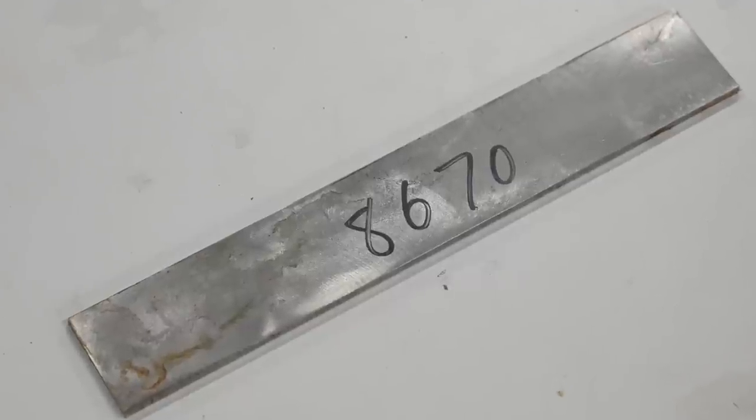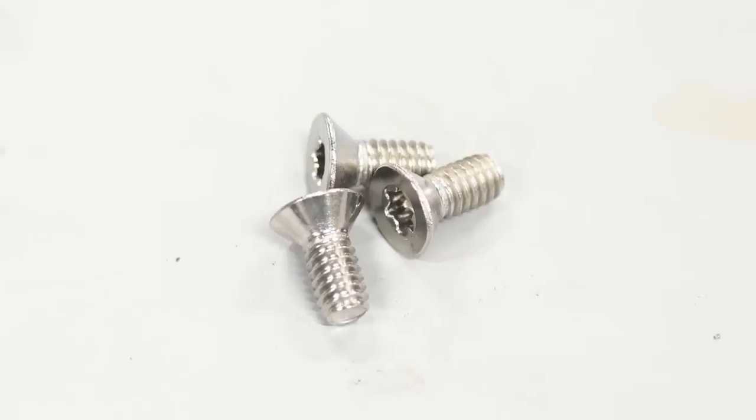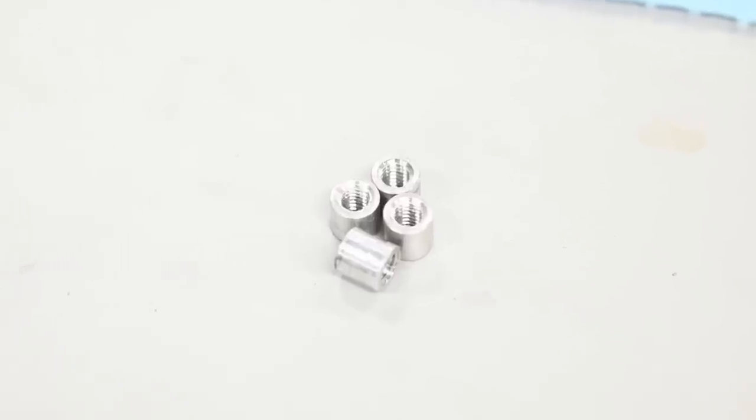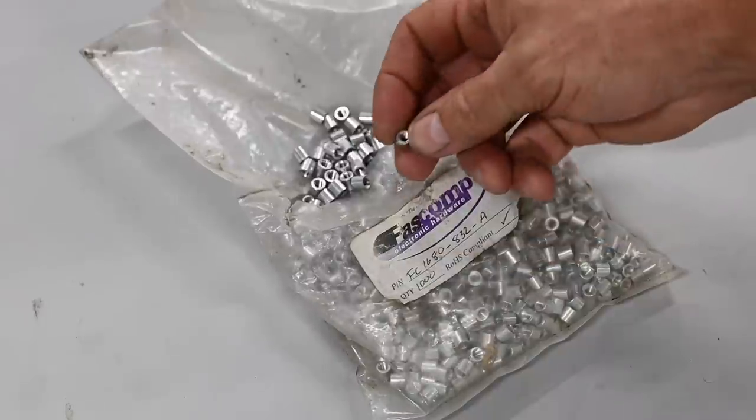Today, I'll be using some 8670 steel and some really interesting micarta scale material. More on that later. Finally, a bunch of 832 screws and these little dudes right here - quarter inch threaded inserts.